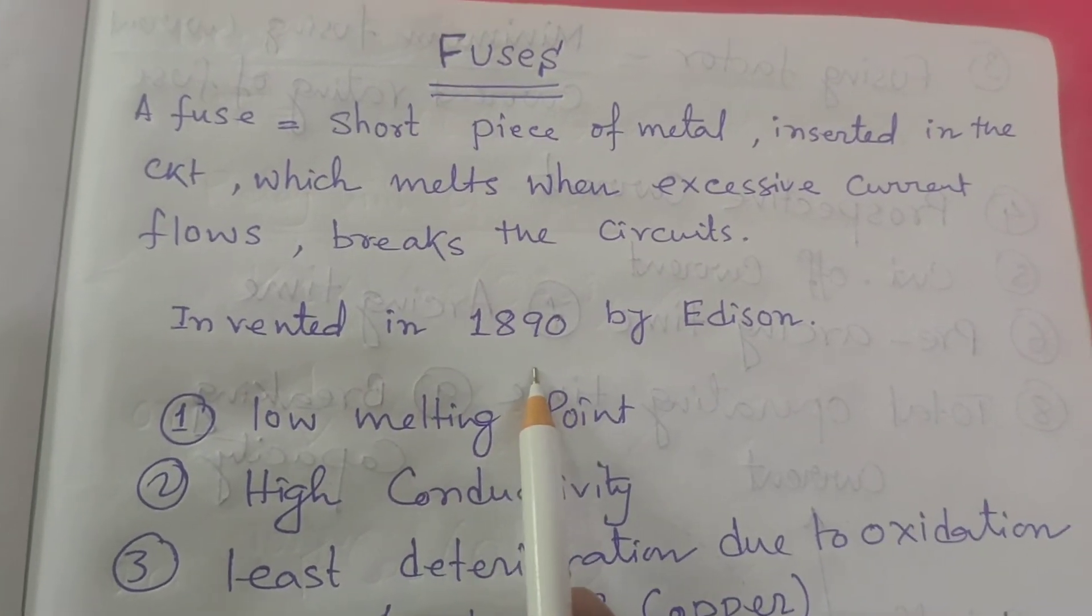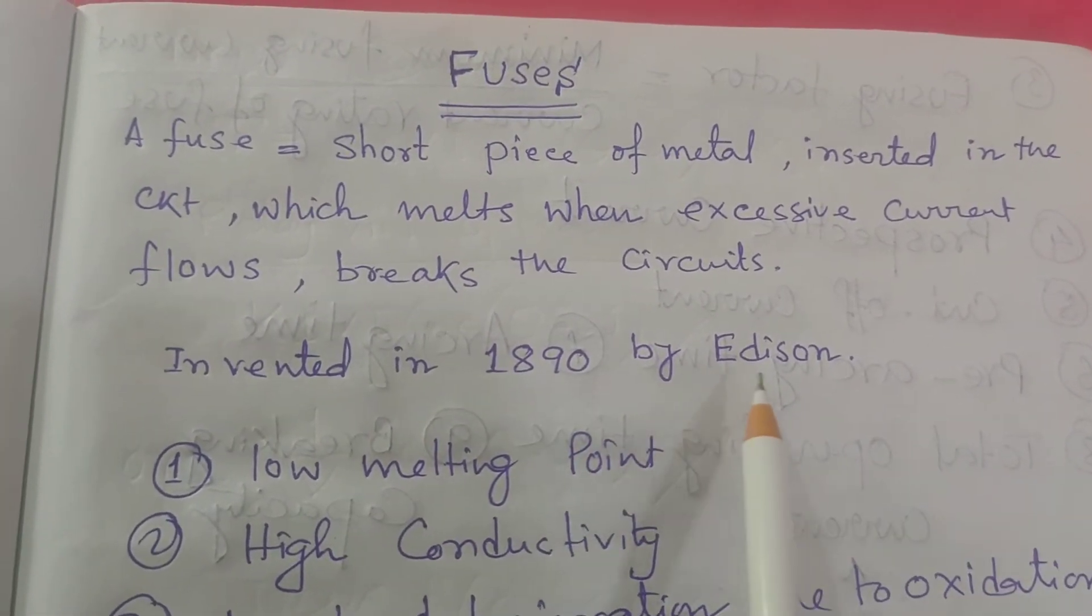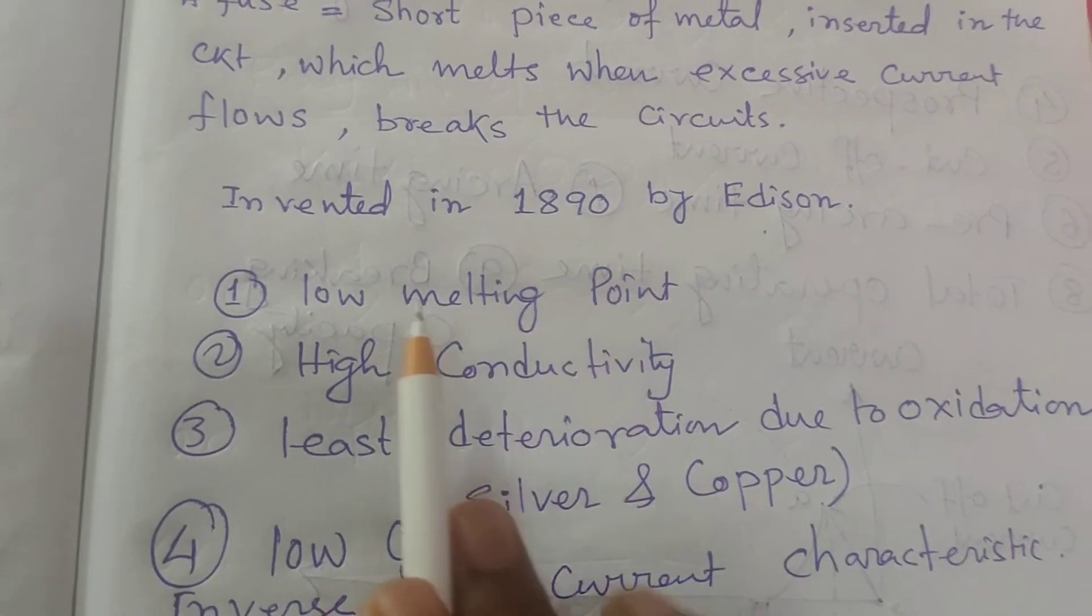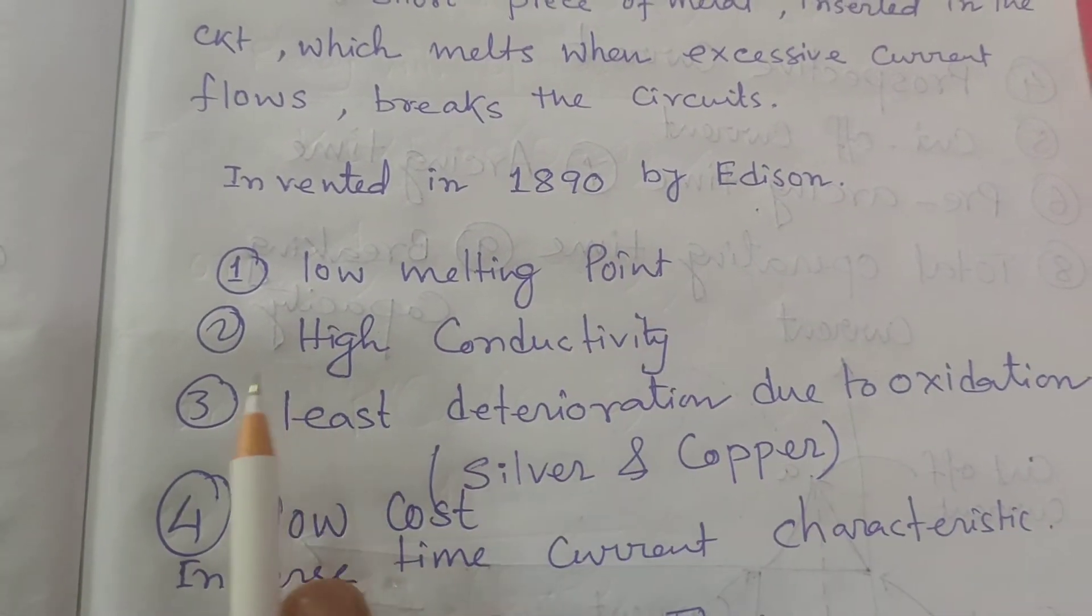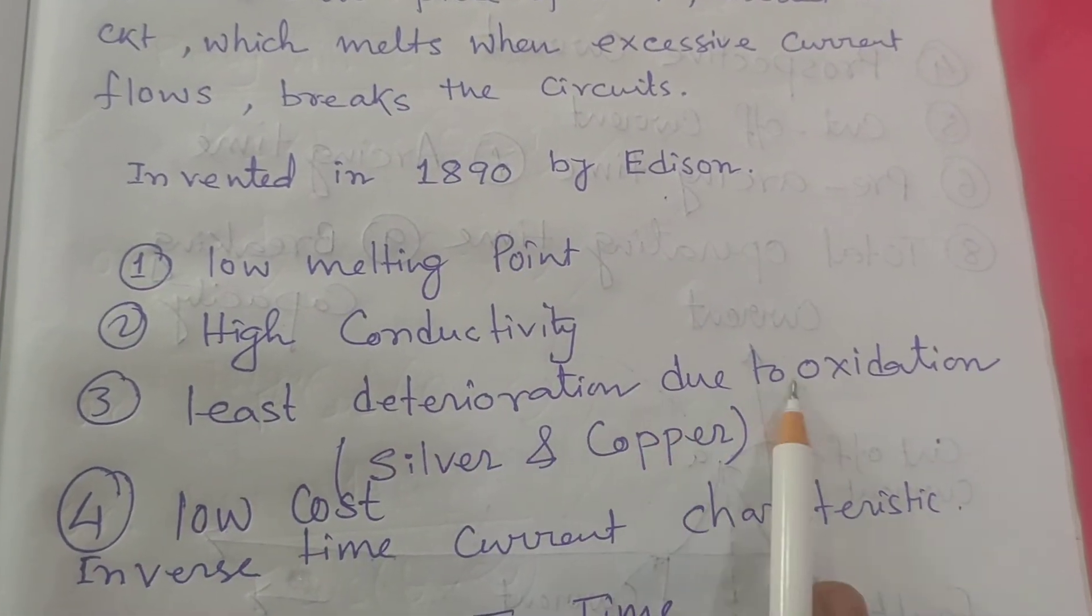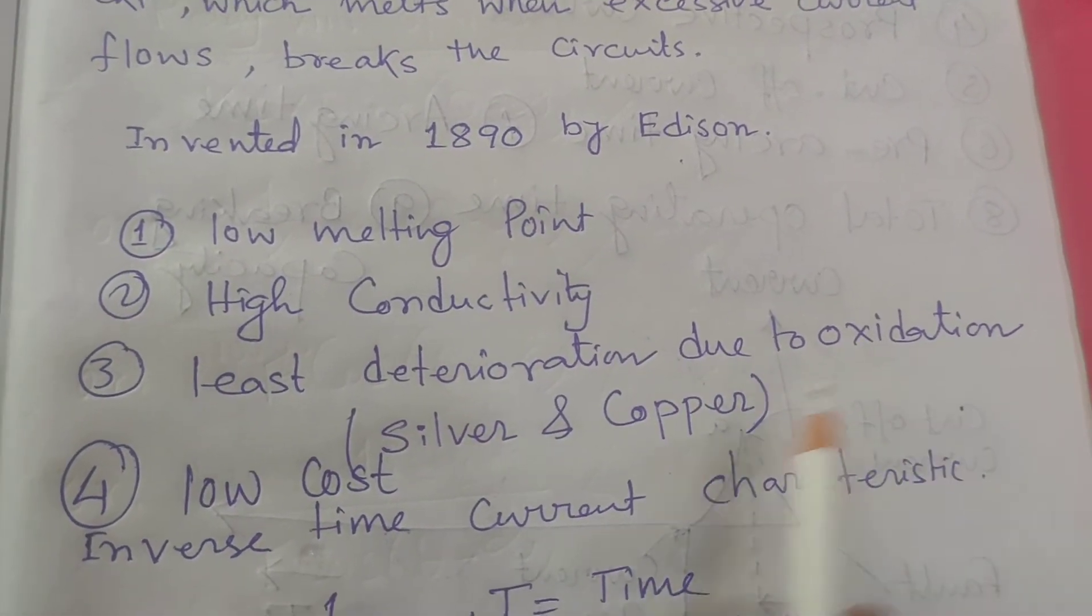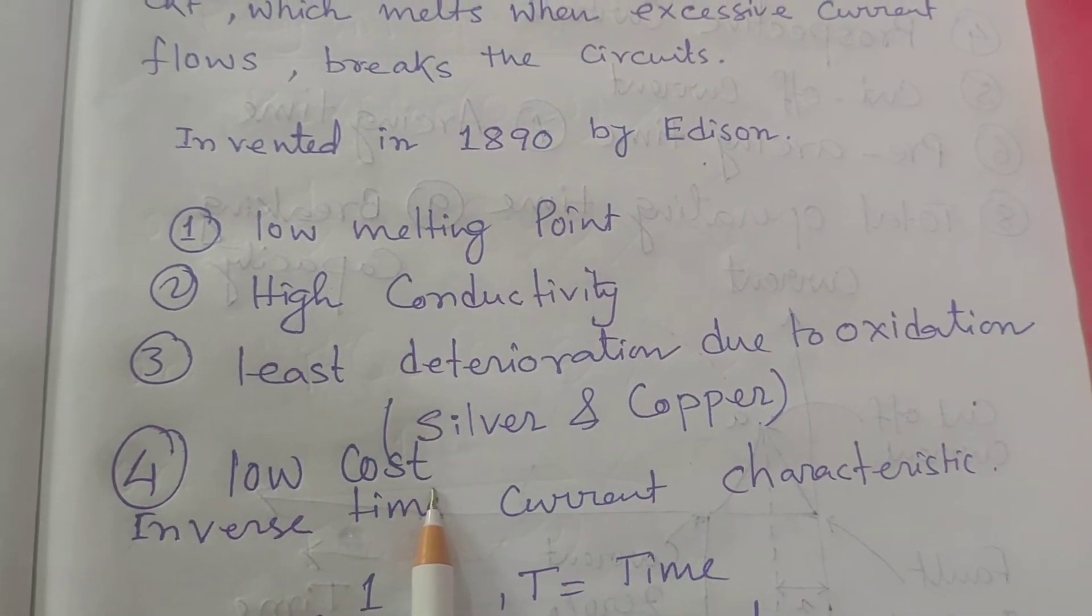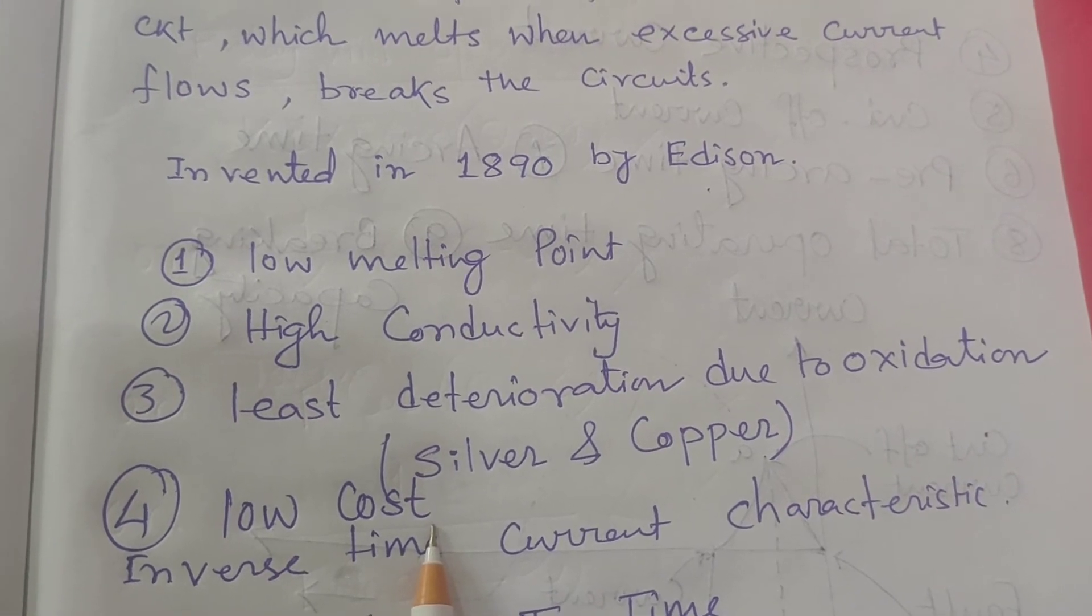The fuse was invented in the year 1890 by Mr. Edison. It should have low melting point, high conductivity, least deterioration due to oxidation, and low cost. These four characteristics or features should be there for proper use of the fuse.